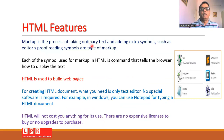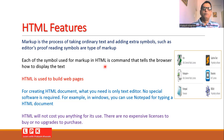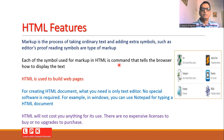Markup is a process of taking ordinary text and adding some extra symbols into it. For example, whenever an editor makes edits to pages, he adds proofreading symbols — that is also a markup process. When creating web pages, we need to use several symbols that are permitted in HTML. By using these symbols, we do the process of markup. Every symbol added in HTML is like a command, and these commands tell the browser how exactly the text should be displayed.